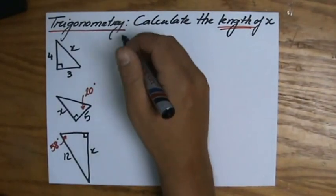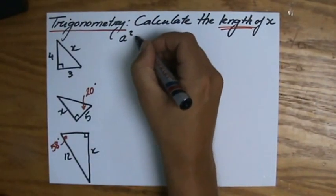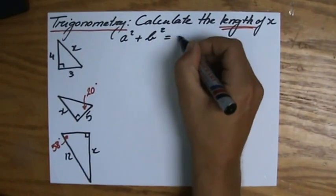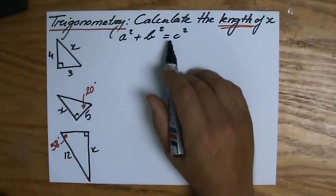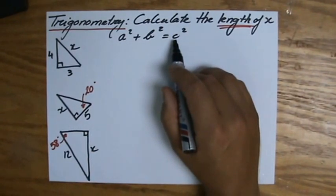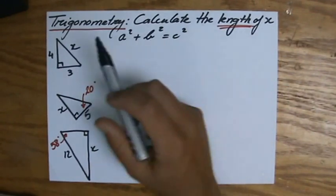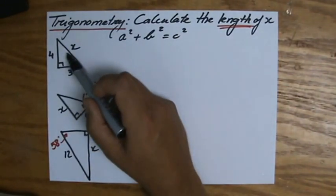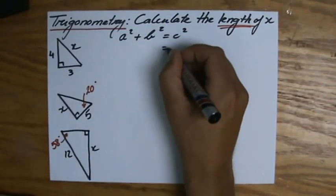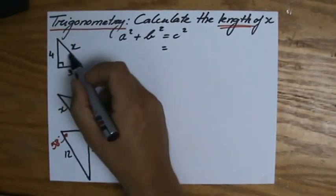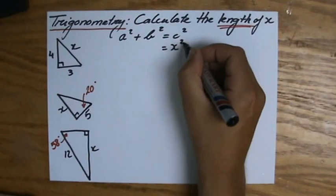We have a very useful method which we call Pythagoras' Theorem, which you should already be familiar with, that a squared plus b squared equals the hypotenuse squared. And the hypotenuse is that side on the other side of the 90-degree angle, so across the 90-degree angle. In this case, that is my x squared.